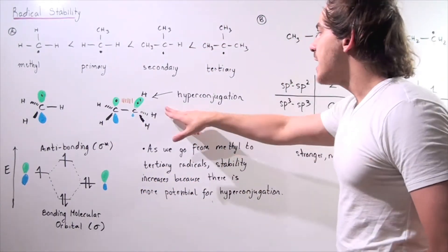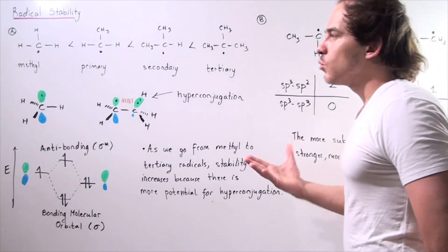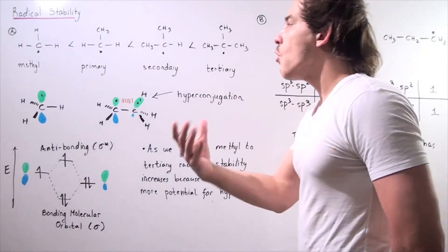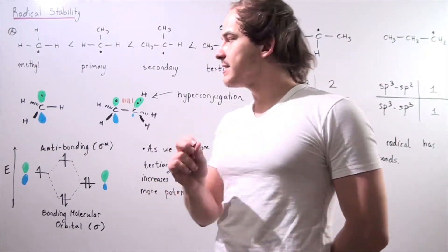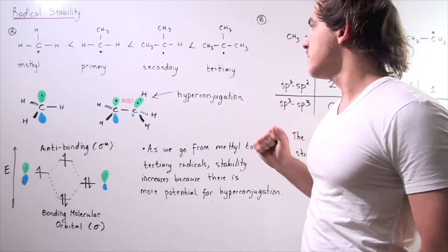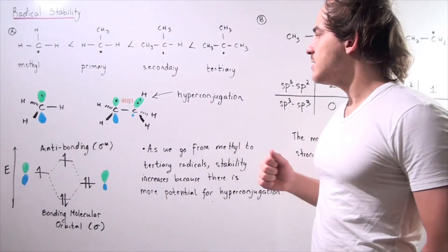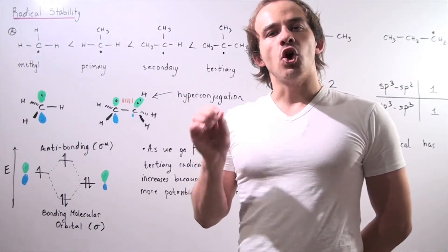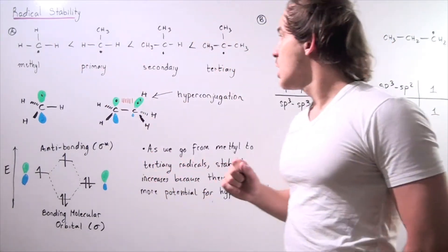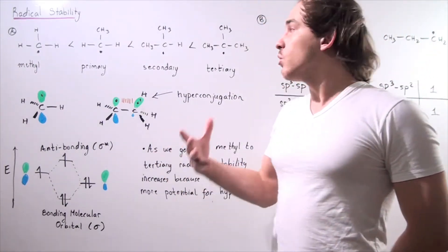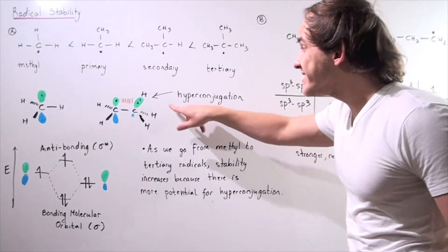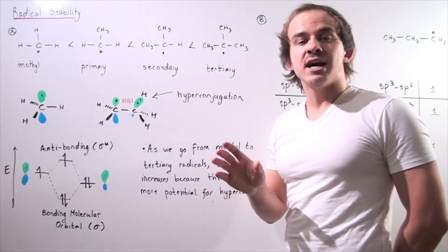The first effect is known as hyperconjugation. When we go from methyl to primary, secondary, to tertiary, we have more hyperconjugation taking place, and that's exactly why these compounds become more stable as we go from methyl to tertiary. We already spoke about hyperconjugation when we discussed carbocation stability — when we go from methyl carbocations to tertiary carbocations, stability increases because of this same effect.